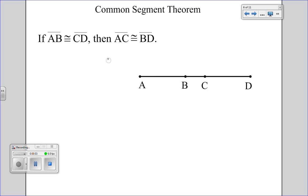In this video, we'll be learning about the Common Segment Theorem and its converse. If you notice, it says if AB is congruent to CD, then AC is congruent to BD. Basically, what it's saying is if you have two parts of a segment that are congruent to each other, and you add the same amount to both of those pieces, then the segment and the new piece will be congruent to the segment and the new piece.